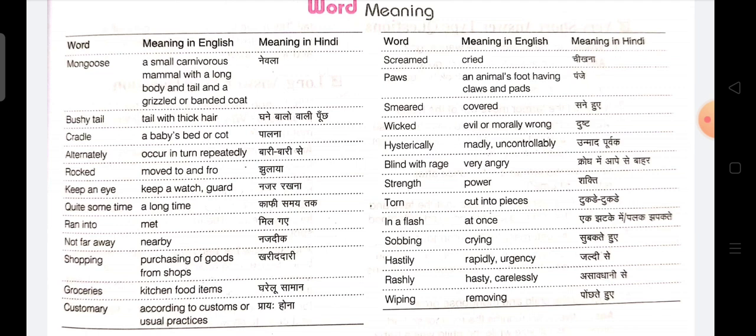Next one is strength — strength means power, shakti. Torn — torn means cut into pieces, tukre tukre kar dhena. Next one is in a flash — at once, ek jhatke mein ya phir palak chhapaktay hii. Next one is sobbing — sobbing means crying, ya phir subak-subak kar rohna. Hastily — hastily means rapidly, urgency, jaldi se.